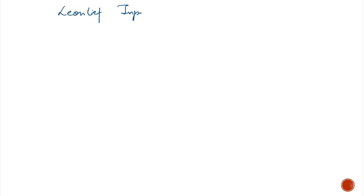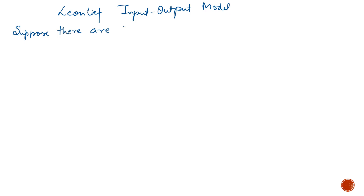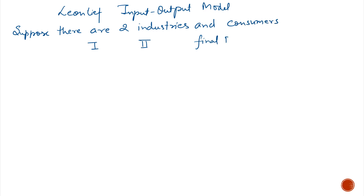Leontief Input-Output Model. Suppose there are two industries. Each industry produces some goods and services which are partially consumed internally by the two industries, and the rest are used by customers. So we are assuming there are two industries — first, second — and there is some outside demand called final demand, and the sum of all gives you the output.